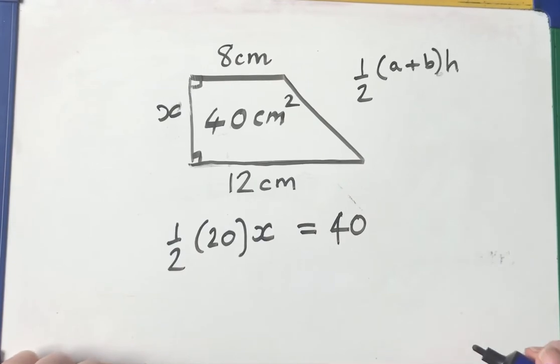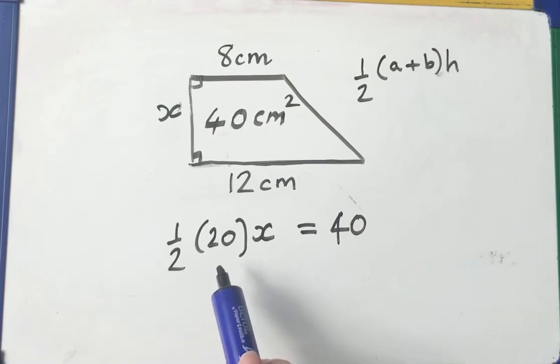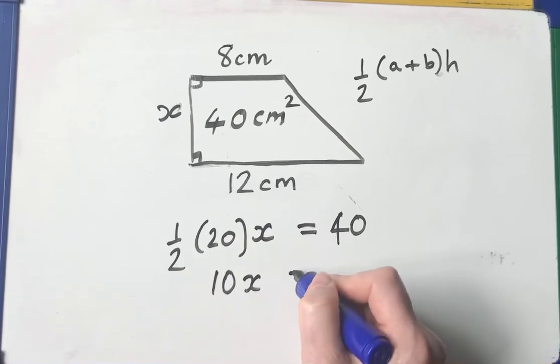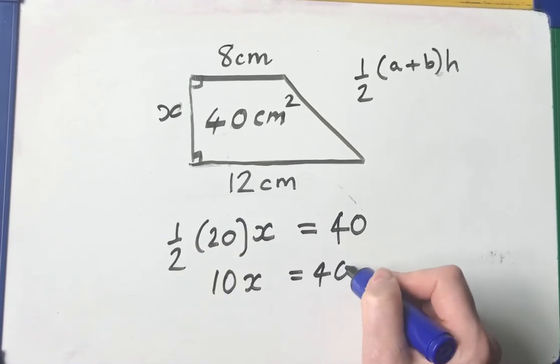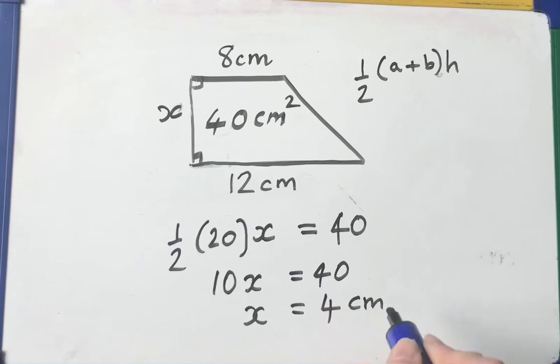It might do some good as well to watch the video on solving equations. But let's look at this. Half of 20 is 10. So 10x equals 40. Well, the inverse of times 10 is divided by 10. So x equals 4 centimeters.